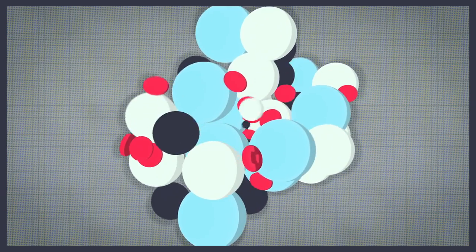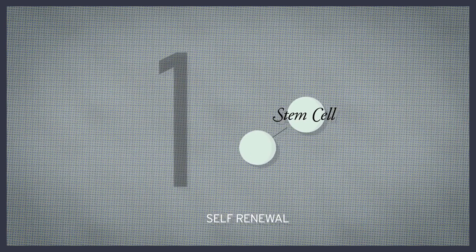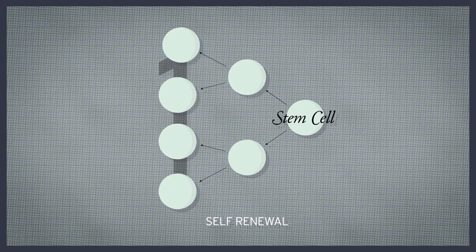These experiments revealed two defining properties of a stem cell. First, a stem cell must be able to self-renew. That is, it must be able to divide and give rise to more cells like itself.